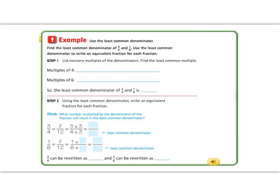Good job so far, fifth graders. We have one more example. This example asks us to find the least common denominator, sometimes called the LCD or lowest common denominator. Finding the lowest common denominator helps with fractions because when simplifying, answers already in their lowest common denominator require less work. For this example, we'll find the least common denominator of three-fourths and one-sixth by counting multiples. Counting by fours: four, eight, twelve, sixteen, twenty, twenty-four, twenty-eight.